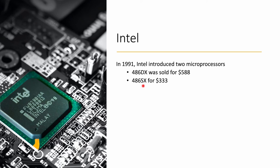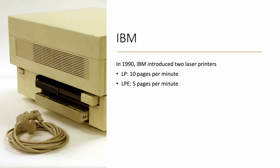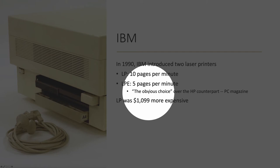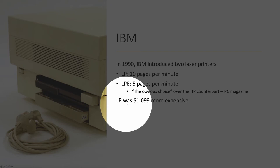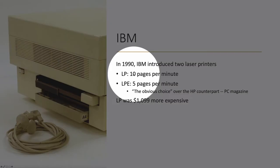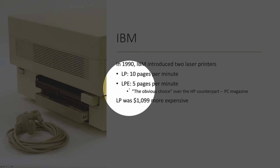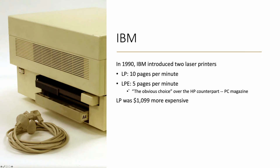So why do companies do crazy things like this? Intel is not alone. In 1990, IBM introduced two laser printers: the model LP, which prints 10 pages per minute, and the model LPE, which prints 5 pages per minute. PC Magazine at that point said the LPE model was the obvious choice over the HP counterpart, and the faster LP model was almost $1,100 more expensive. Interestingly, inside the printers, the two models are identical in all physical characteristics. The only difference is that IBM added a counter in the LPE model whose only function is to slow the printer from 10 pages per minute to 5 pages per minute. Again, IBM destroyed its own product.